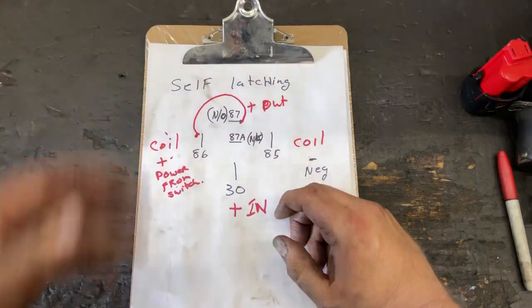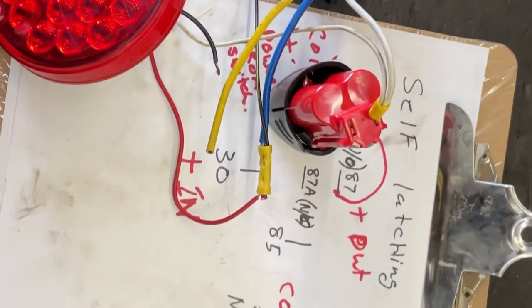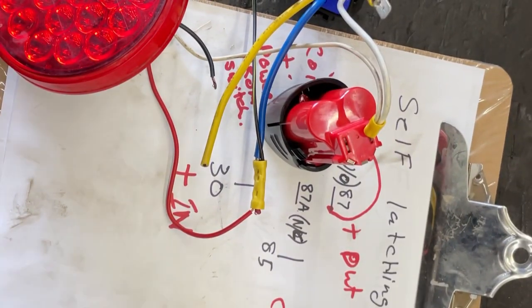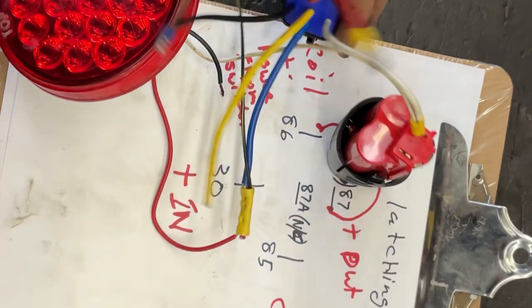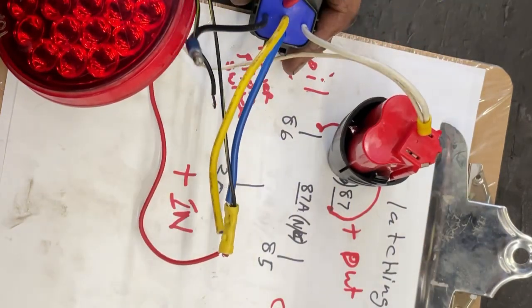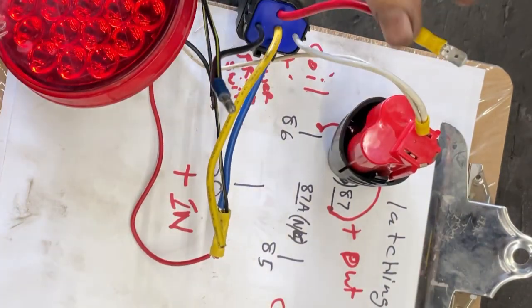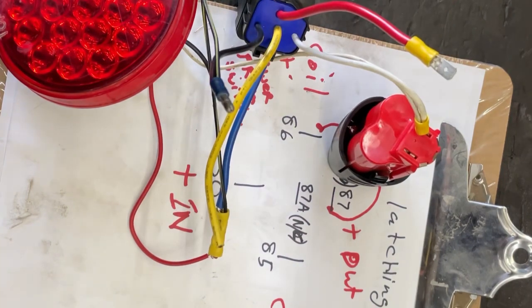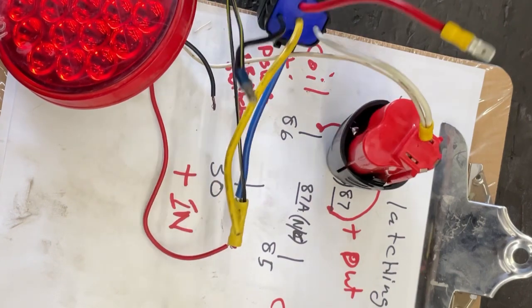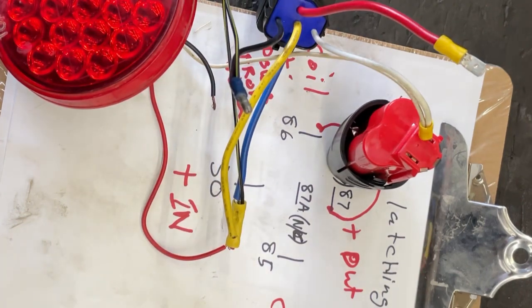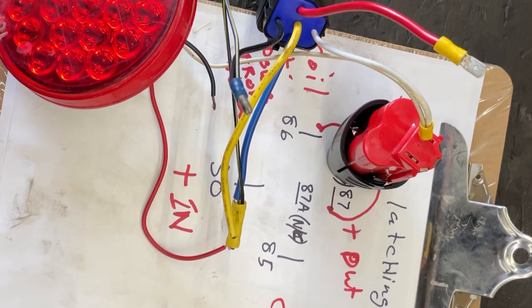All right guys, so how you get this thing wired, super easy to do. This is going to be your keyed-on power. That is something that I need to mention: if you're wiring this up, this needs to be keyed power or run off of another relay. That's the only way this can work because you have to shut it off. You physically have to shut the whole relay off for this to work.